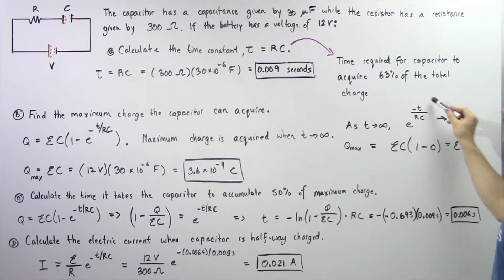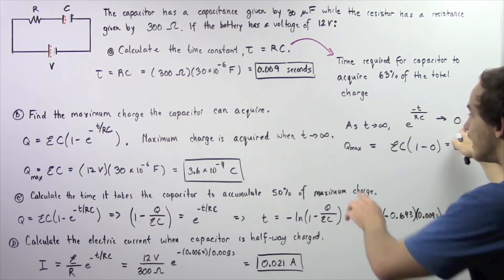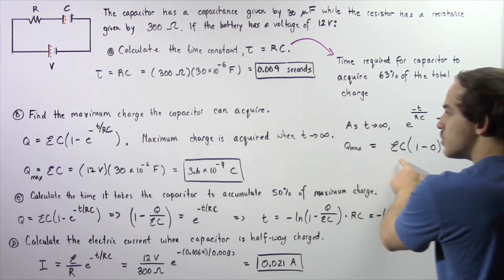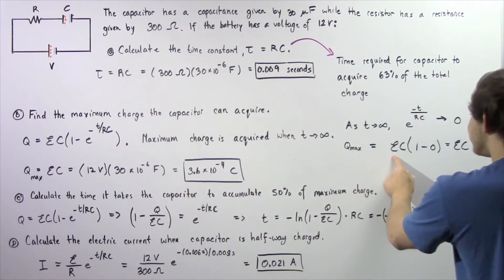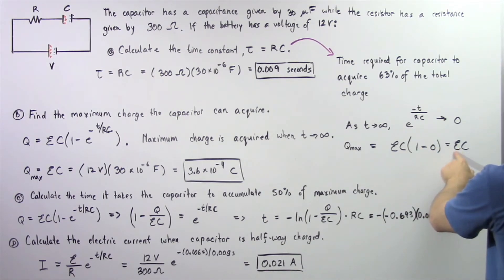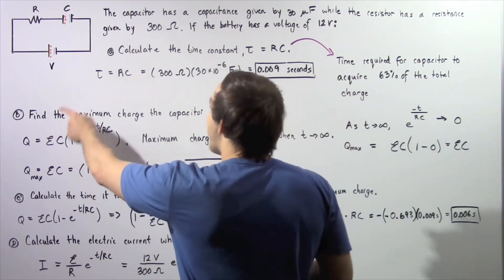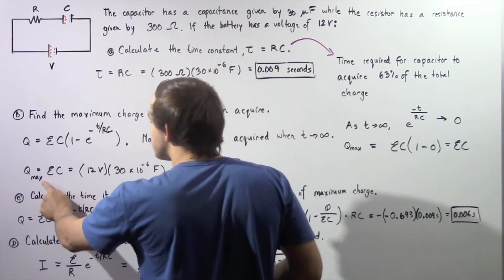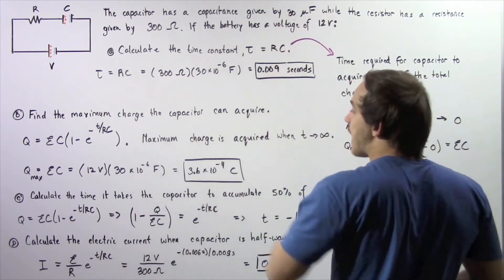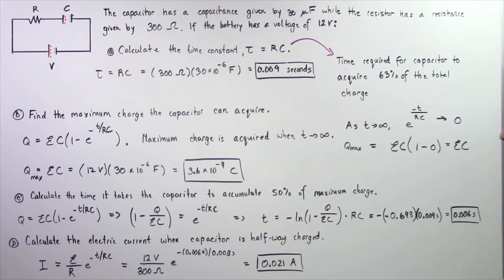As time approaches infinity, the exponential term becomes very small and approaches zero. This implies the maximum quantity of charge equals the product of voltage and capacitance — V times C. So we multiply 12 volts by 30 microfarads and get 3.6 times 10 to the negative 4 coulombs.